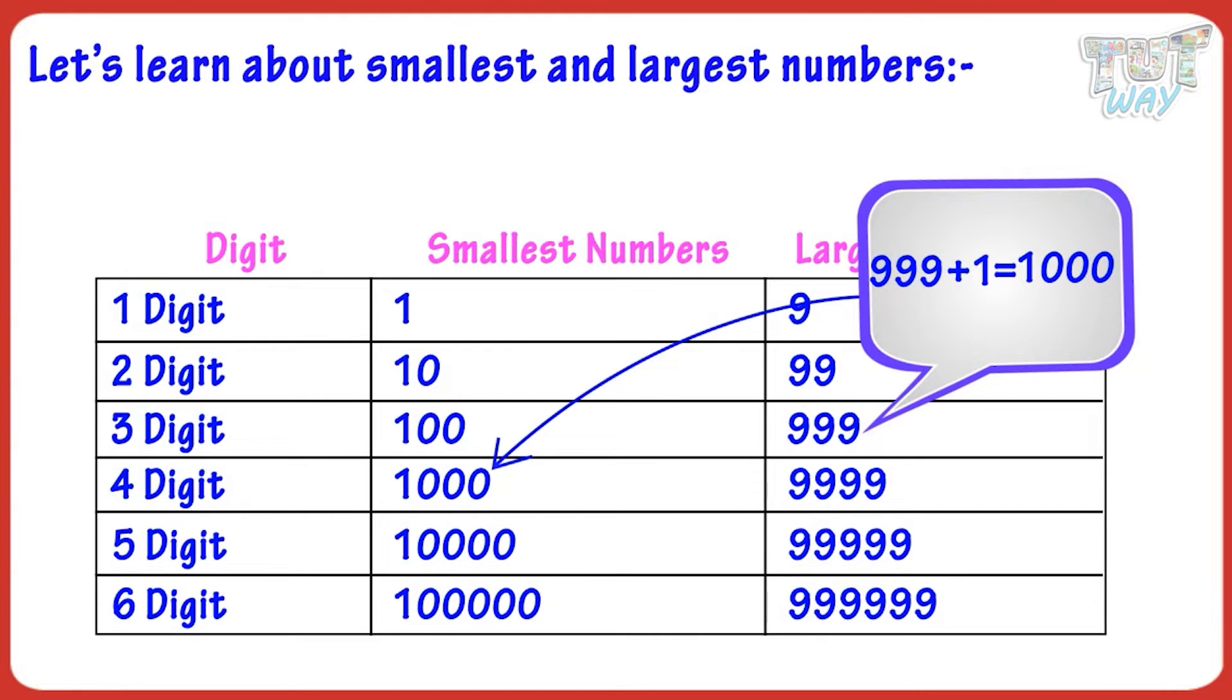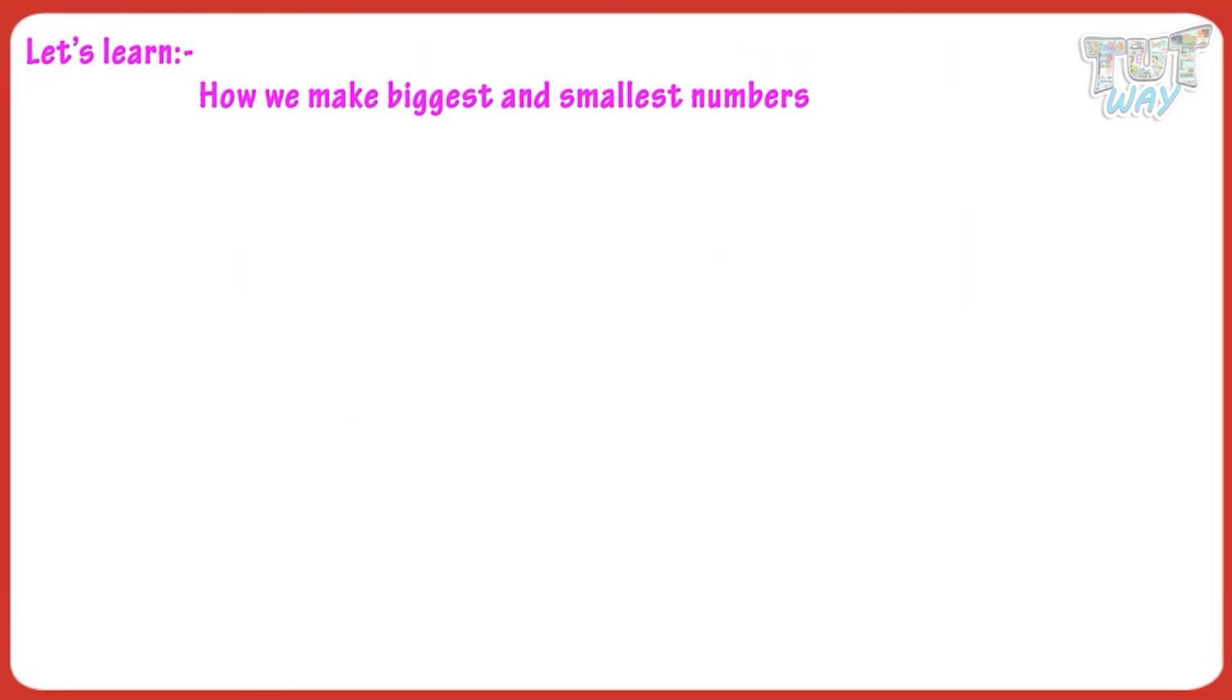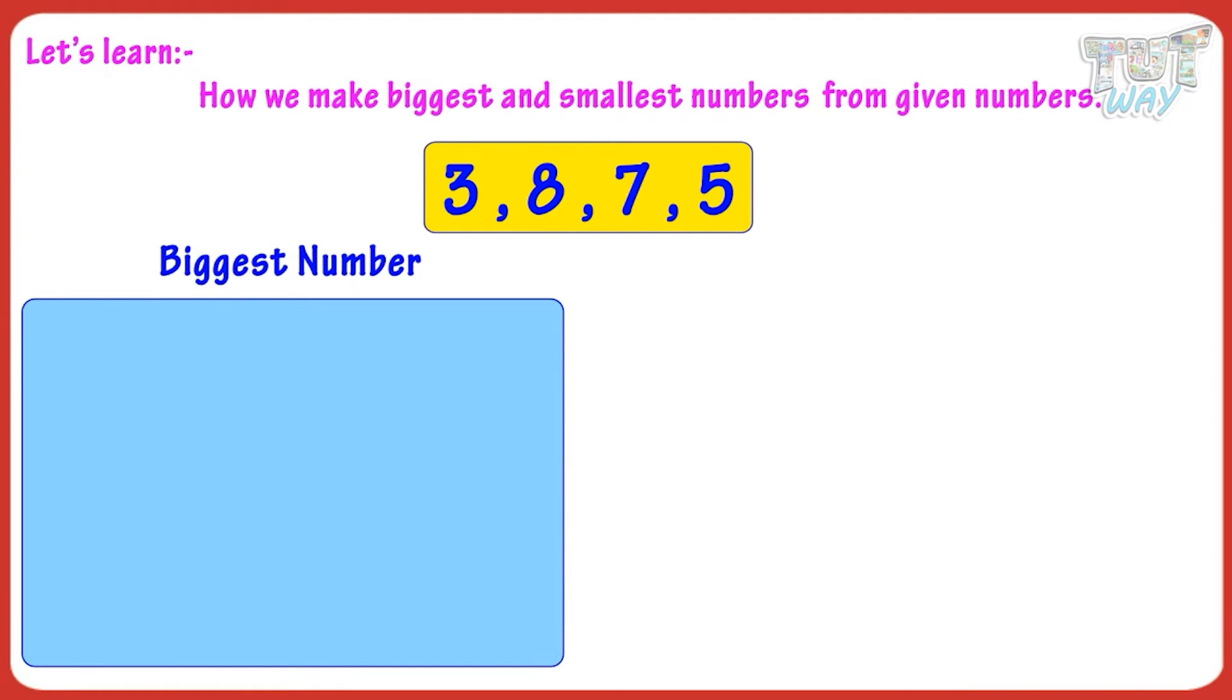Now, we will learn how to make biggest and smallest numbers from the given numbers. Here are four numbers. We have to form the largest four-digit number using these numbers only. Also, we do not have to repeat any number.